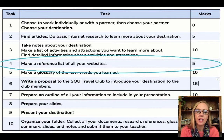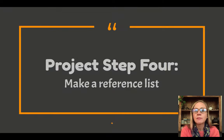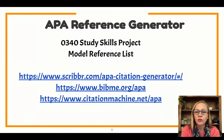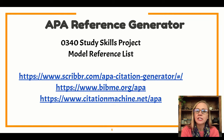Let's look at the marks for this task. It says five marks for making a reference list. You need to make sure that your reference list is accurate and exactly how it's supposed to be, and that's how you get all of your marks. So here we go — step four: making a reference list.